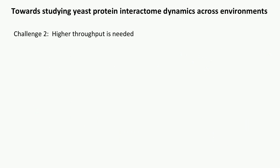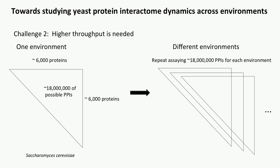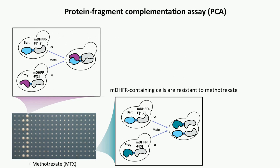The second challenge is that higher throughput is needed. For example, to cover the protein interactome in Saccharomyces cerevisiae, we have to assay 18 million possible protein-protein interactions. And if we want to study different environments, we have to repeat those 18 million assays in each environment, which will cost a lot of money, time, and effort. So here we propose to combine the PCA assay with newly developed technologies to overcome those two challenges.